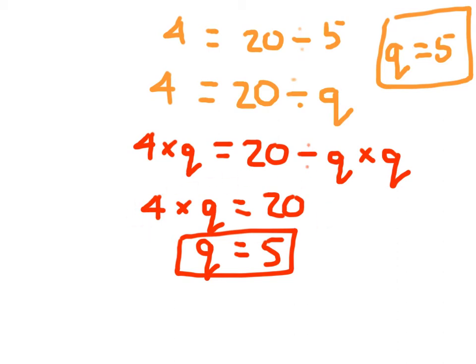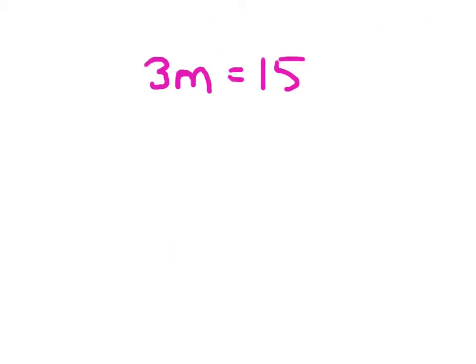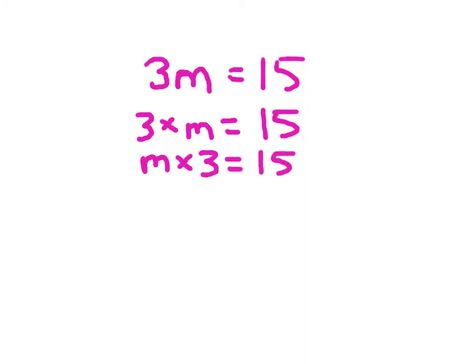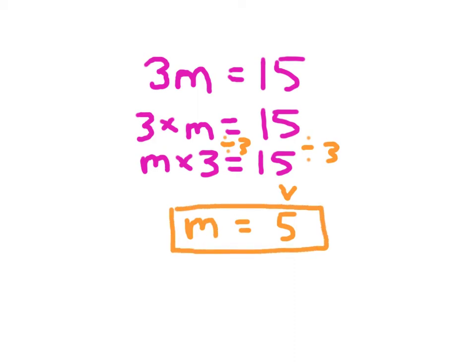Now let's look at how to solve multiplication-type problems written with coefficient notation. 3M means 3 times M — 3 of M equaling 15. I can rewrite that as M times 3 equaling 15. In this case, the inverse operation of times 3 is divided by 3, so I divide both sides by 3. 15 divided by 3 is 5, and M times 3 divided by 3 leaves us with M, so M equals 5.